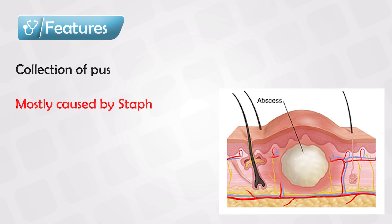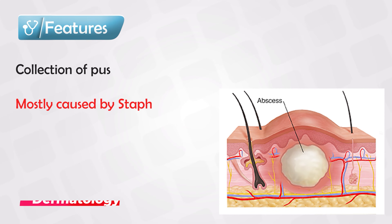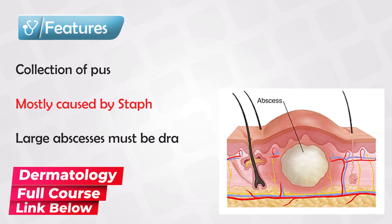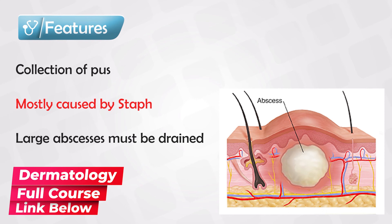Depending on the size of the abscess, the patient might have a small lump, or a large lump with fever and chills. For large abscesses, you should not give antibiotics until you drain the abscess, mainly by incision and drainage.